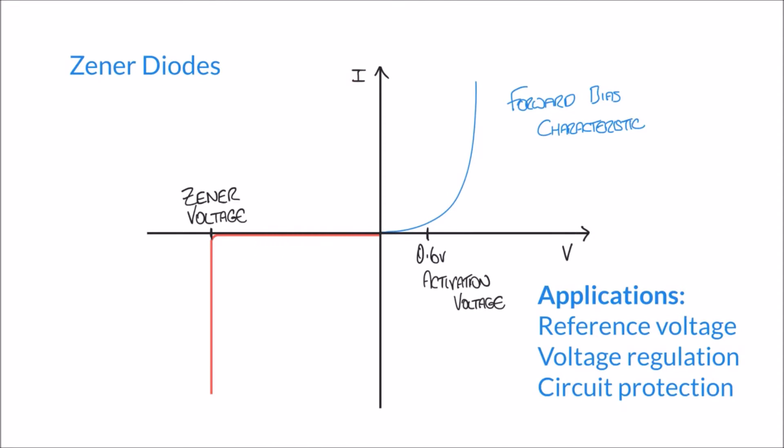The difference occurs at this point here which we call the Zener voltage. Every Zener diode has a Zener voltage and the Zener voltage depends on the particular Zener diode that you're using. But the Zener voltage is a point at which all of a sudden the diode will be allowed to conduct and so current starts to flow.